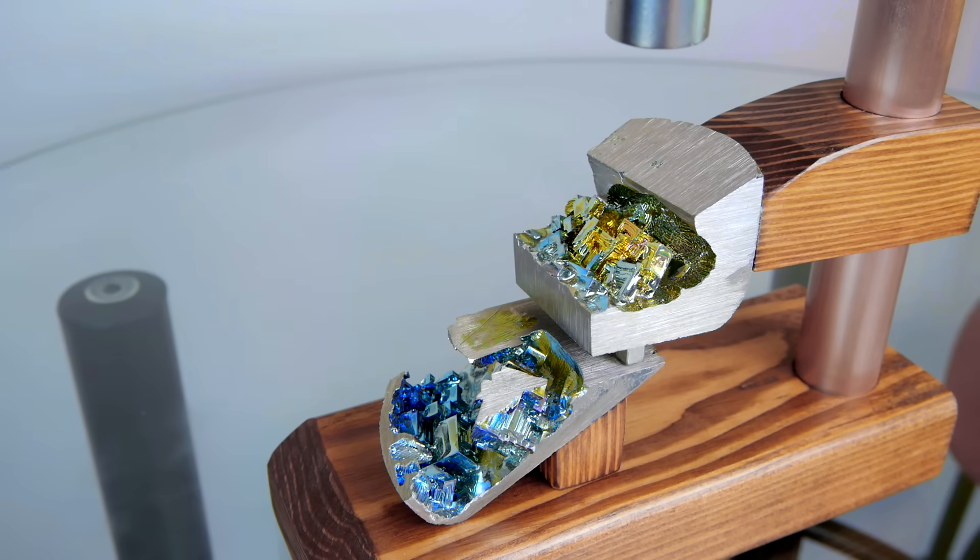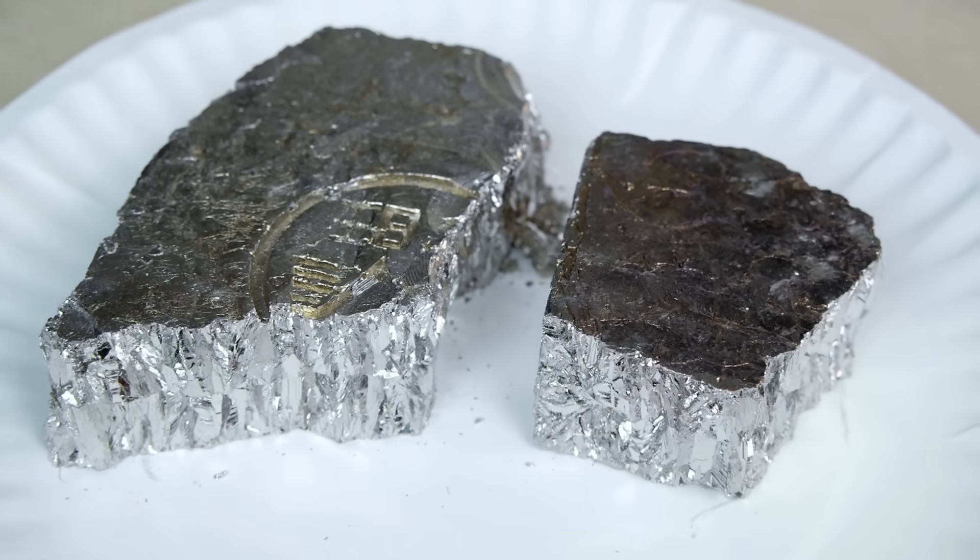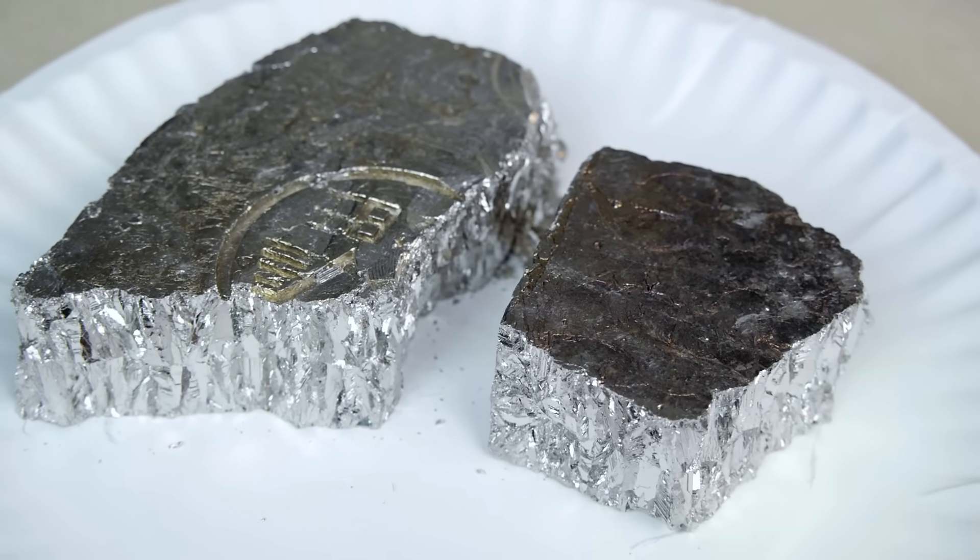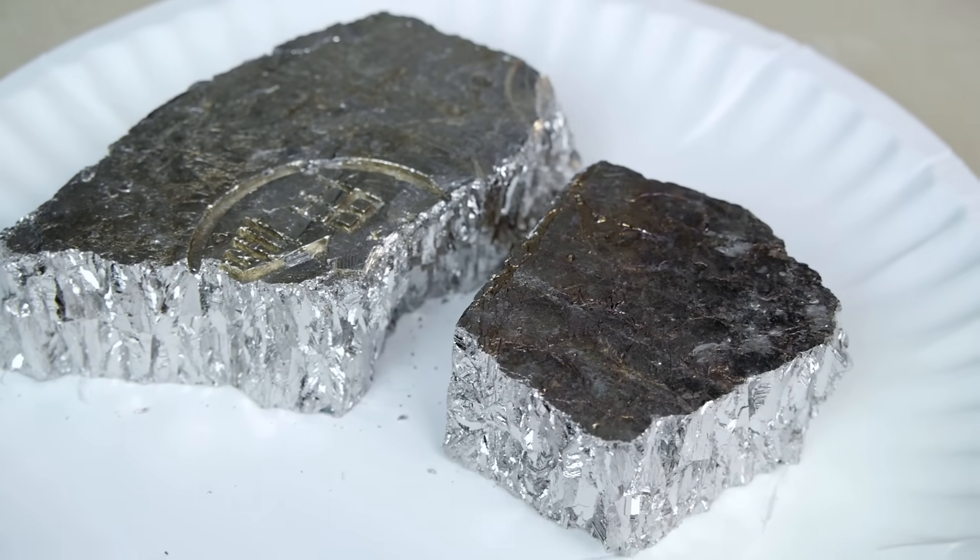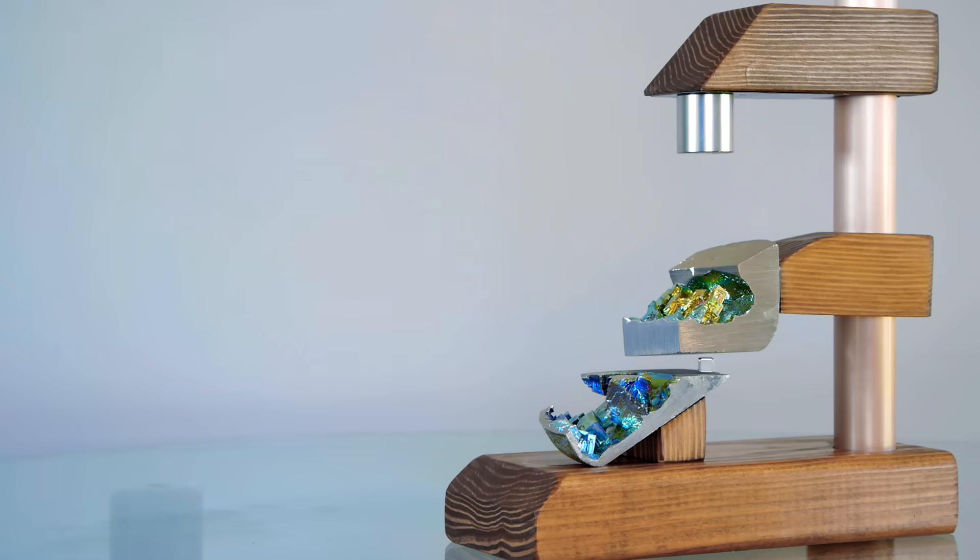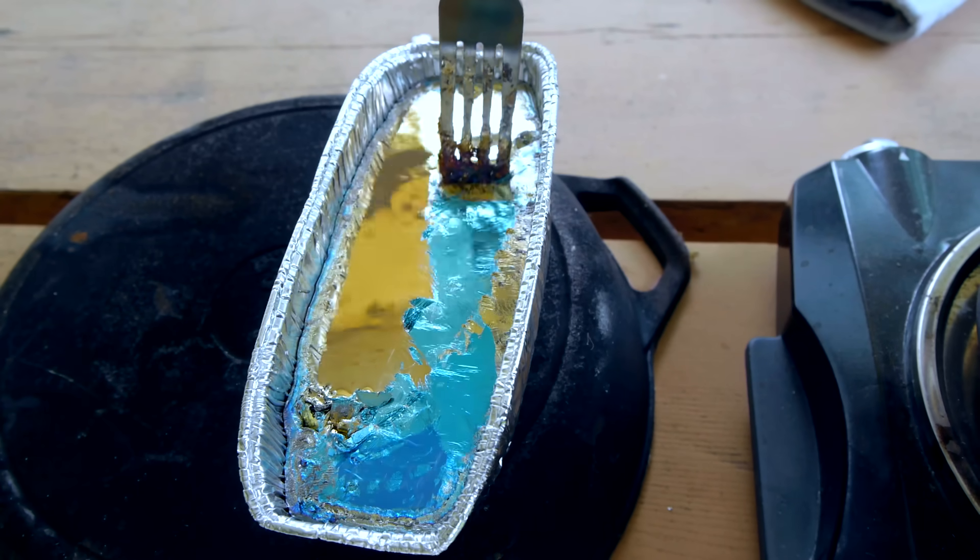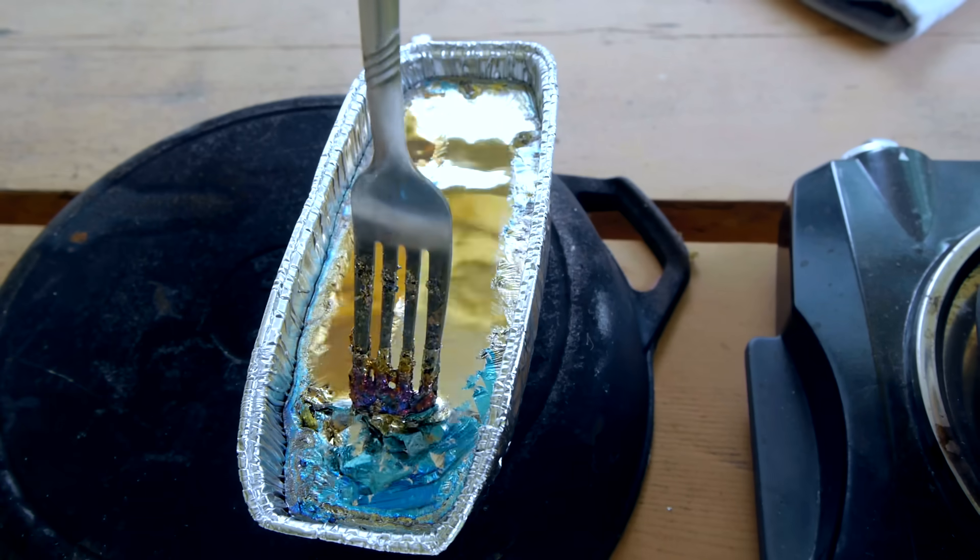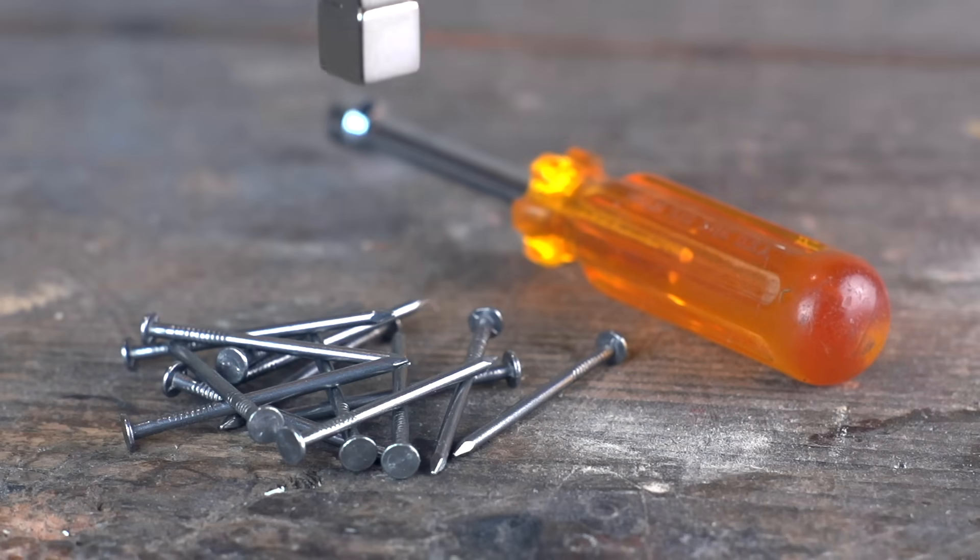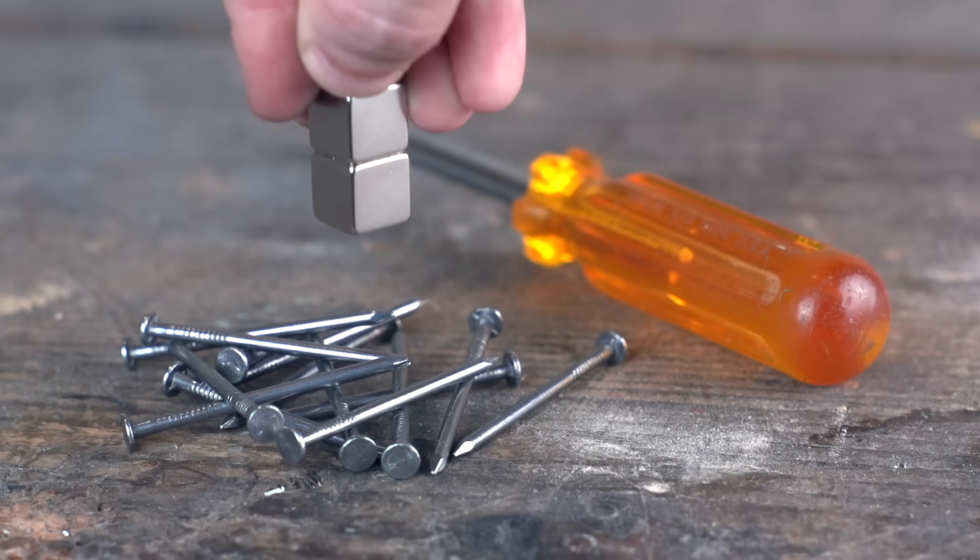For this video I'll be taking advantage of one of bismuth's other properties which is being exceedingly diamagnetic. Materials that are diamagnetic produce their own magnetic field in opposition of any field that's applied externally. It sounds pretty technical, and it is, but for practical purposes you can think of bismuth as reacting to a magnet in the opposite way that iron does. Rather than being attracted to magnets, bismuth pushes them away.